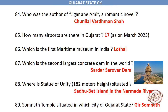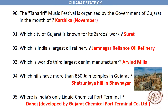Where is the Statue of Unity, 182 meters, situated? Sadhu Bet Island in the Narmada River. Somnath Temple is situated in which city of Gujarat state? Gir Somnath. The Tanariri Music Festival is organized by the Government of Gujarat in the month of Kartika.